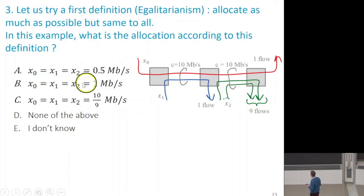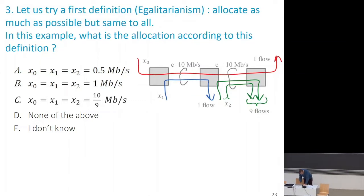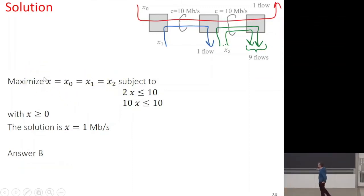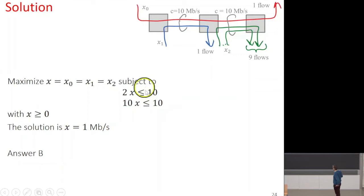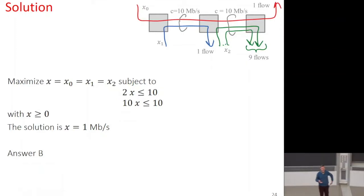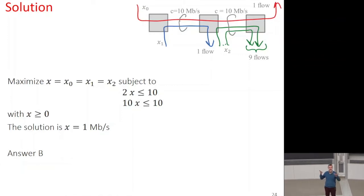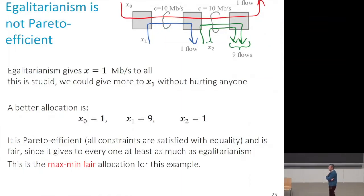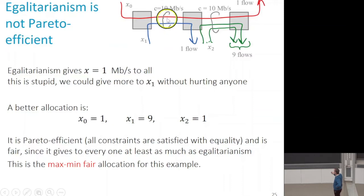The egalitarian allocation maximizes the common value x subject to all constraints. The constraints give 2x ≤ 10 and 10x ≤ 10, so x ≤ 1 and the maximum is 1. This is also called water filling: we raise the value of everybody at the same time until we hit an impossibility. However, giving 1 megabit per second to all is not Pareto efficient — the first link is used at only 20%. We could give more to the blue sources.